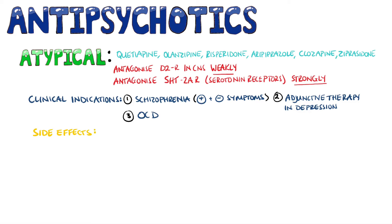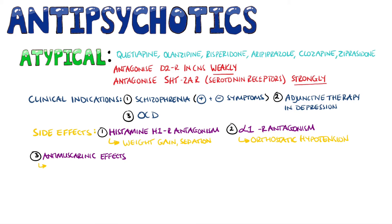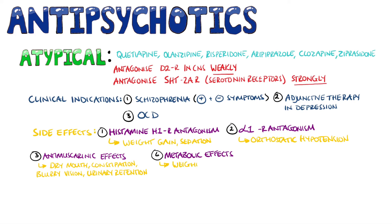The side effects associated with atypical antipsychotics include sedation due to antagonism of the histamine H1 receptor, orthostatic hypotension due to alpha-1 receptor antagonism, as well as anti-muscarinic side effects like dry mouth, constipation, blurry vision, and urinary retention. Additionally, atypical antipsychotics often feature more metabolic side effects, like weight gain, dyslipidemia, and hyperglycemia.